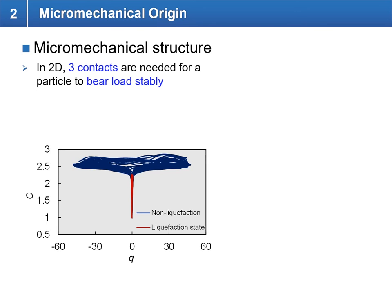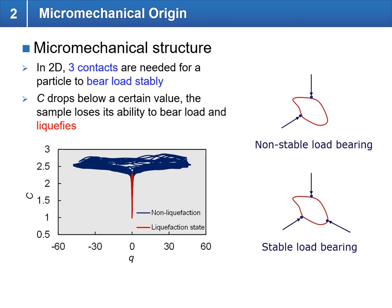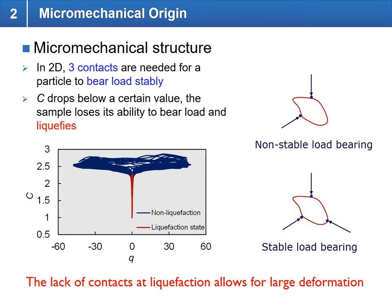Let's consider the micro-mechanical structure of particles in 2D. A particle needs three contacts to bear contact load stably; with only two contacts, this is a non-stable load-bearing structure and it will move under contact loads, whereas three or more contacts generally yields a more stable structure. This is consistent with our observation for coordination number: when the coordination number drops below a certain value, the sample loses its ability to bear load and hence liquefies — the lack of contacts at liquefaction allows for the large deformation we observe.